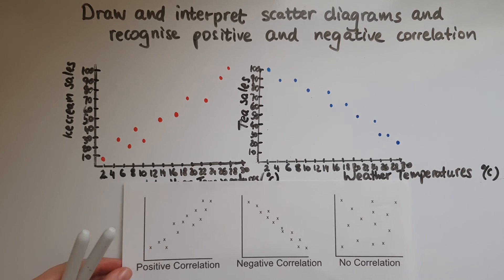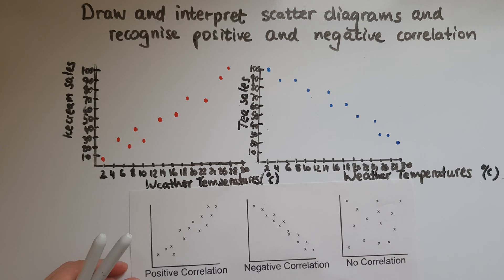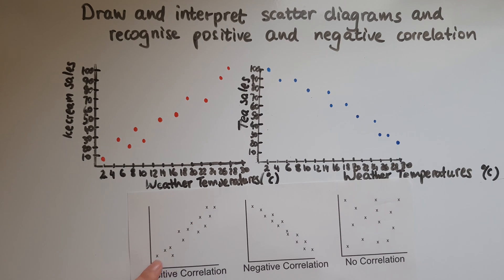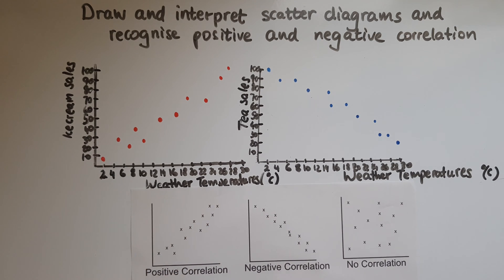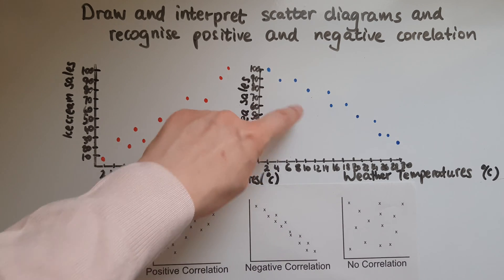I'll show through another example here as well. So we've got very similar to the first one. We've got a positive correlation here. So one increases, the other increases as well. So that is a positive correlation. And we've got a negative correlation just like this one here.